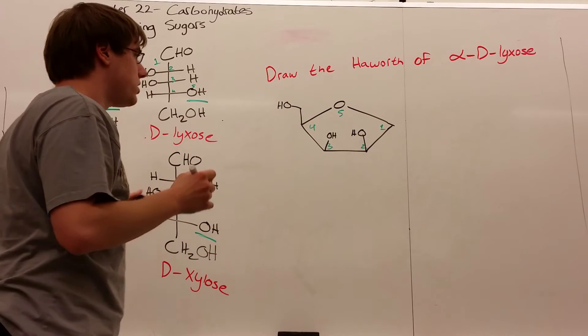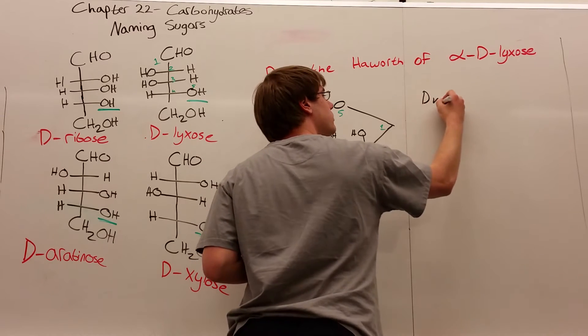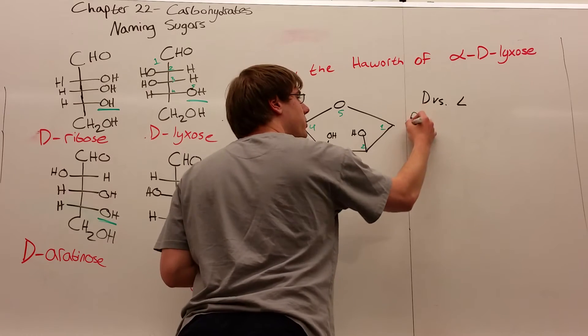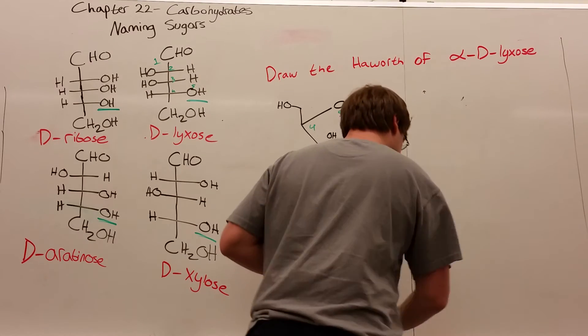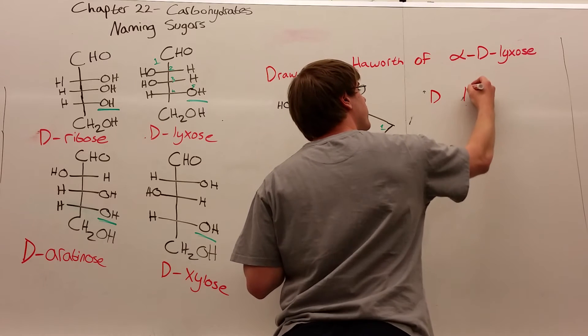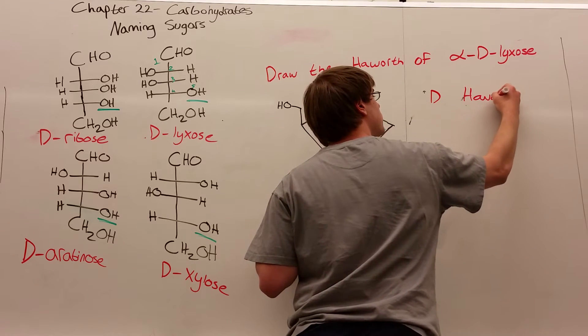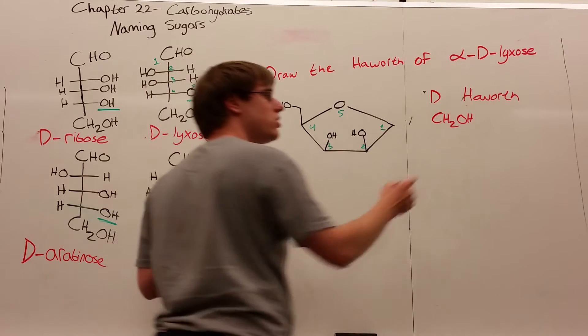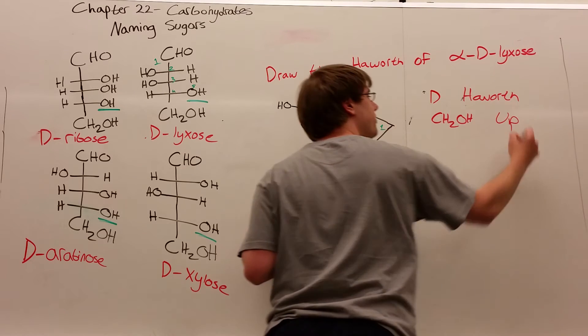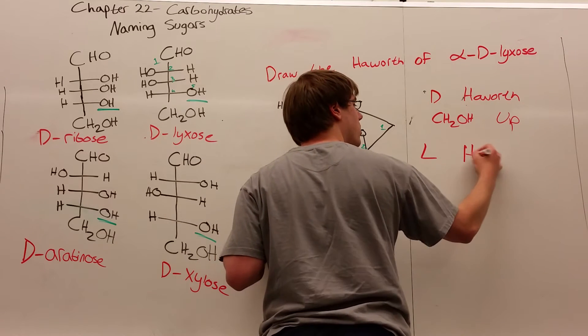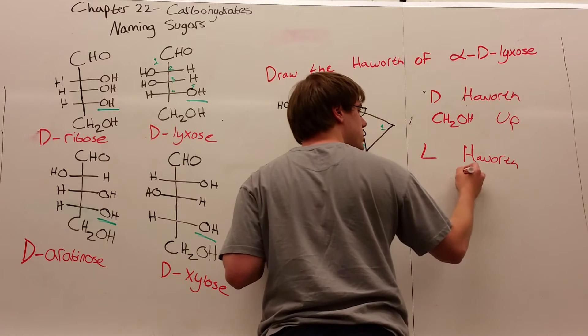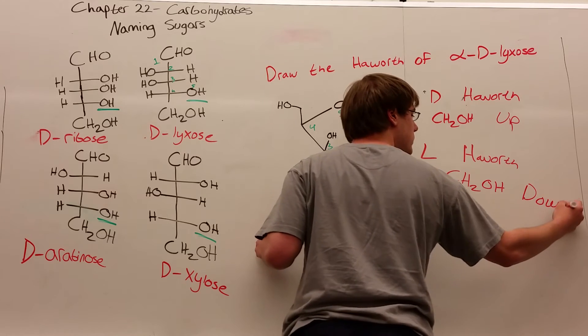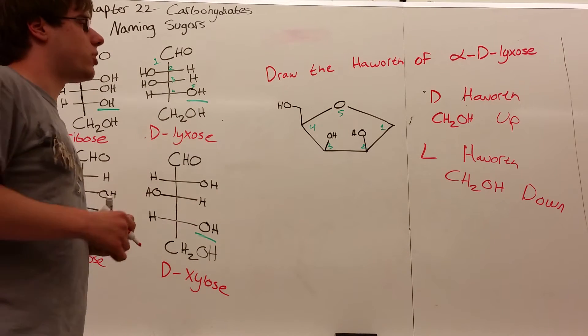The other way to consider D versus L: in the Haworth projection, D points up. For a D sugar, the penultimate CH2OH points up. For an L sugar in the Haworth, the CH2OH would point down. So we have the D-lyxose part, but what about the alpha part?